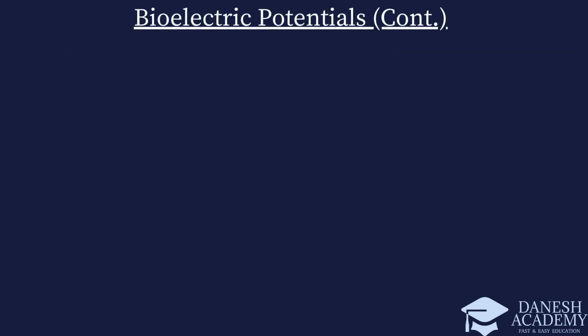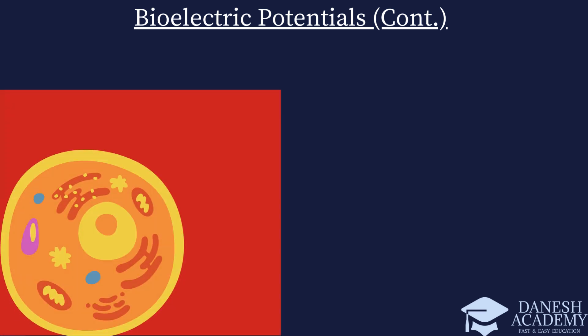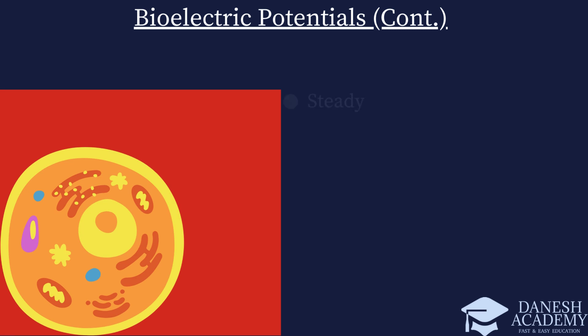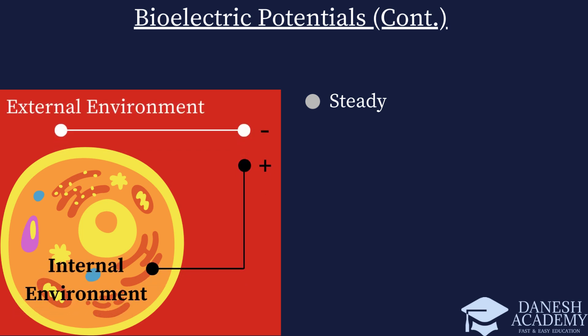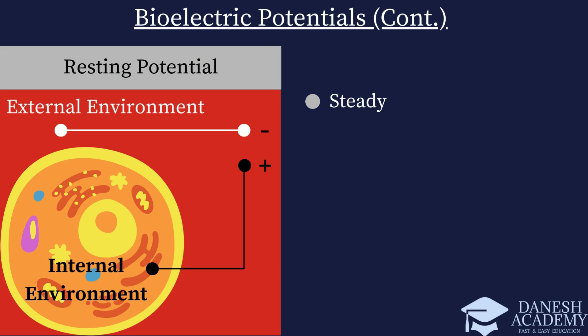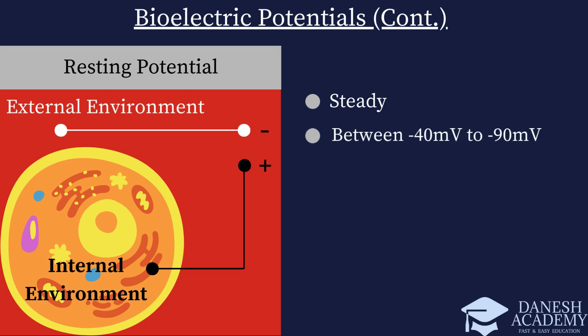Now that we know what bioelectric potentials are, let's talk about resting potential and action potential in detail. The individual cell keeps a steady electrical difference between its internal and external environment, called the resting potential. This usually sits in the range of negative 40 to negative 90 millivolts compared to the environment around it.